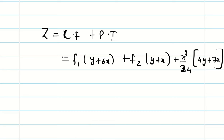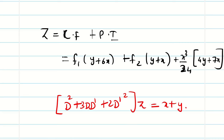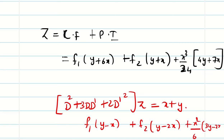Now you can try this problem for practice: (D square minus 3 D D dash plus 2 D dash square) z equals x plus y. Since it is x plus y, the power of x and power of y is the same, so I take the highest derivative of d outside. You can proceed and you will get the solution: f1(y minus x) plus f2(y minus 2x) plus x squared over 6 times (3y minus 2x). Thanks for your patience watching the video. Kindly subscribe and share with your friends — let everybody get benefit. We will see the next video with another concept. Thank you.